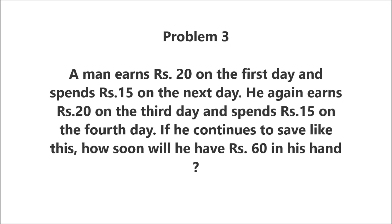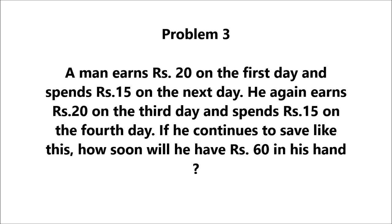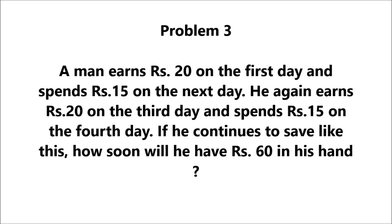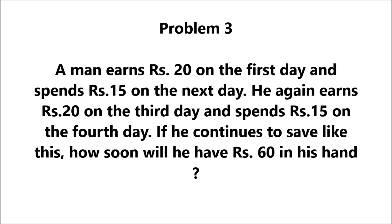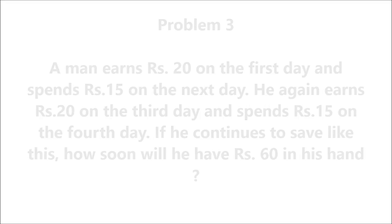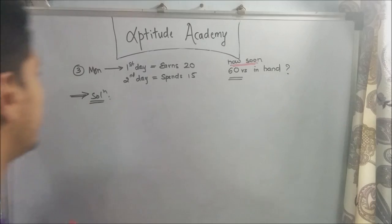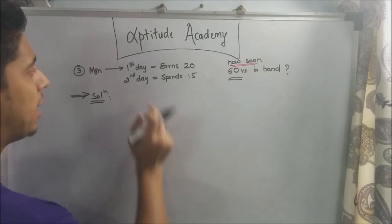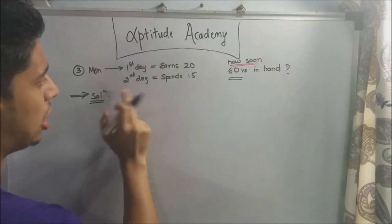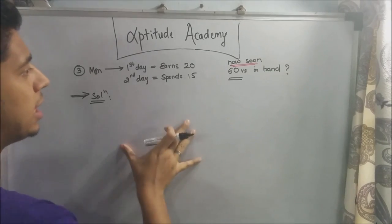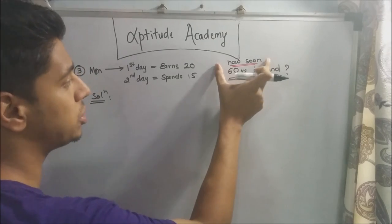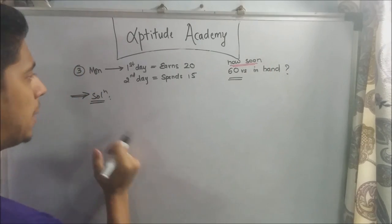Problem 3: A man earns rupees 20 on the first day and spends rupees 15 on the next day. He again earns rupees 20 on the third day and spends rupees 15 on the fourth day. If he continues like this, how soon will he have rupees 60 in hand? This is a very interesting problem — the key word here being 'how soon.'